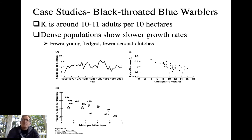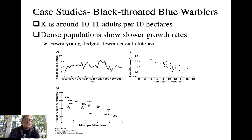Looking at data from black-throated blue warblers: carrying capacity in the habitats studied was about 10 to 11 adults per hectare, and you can see that's kind of what we see — from year to year the population will overshoot that sometimes, then decrease and come up again, oscillating around carrying capacity. If they overshoot in one year, that density is going to lead to a decline — reproductive success will be less and competition for limiting food in a dense population will increase death rates.